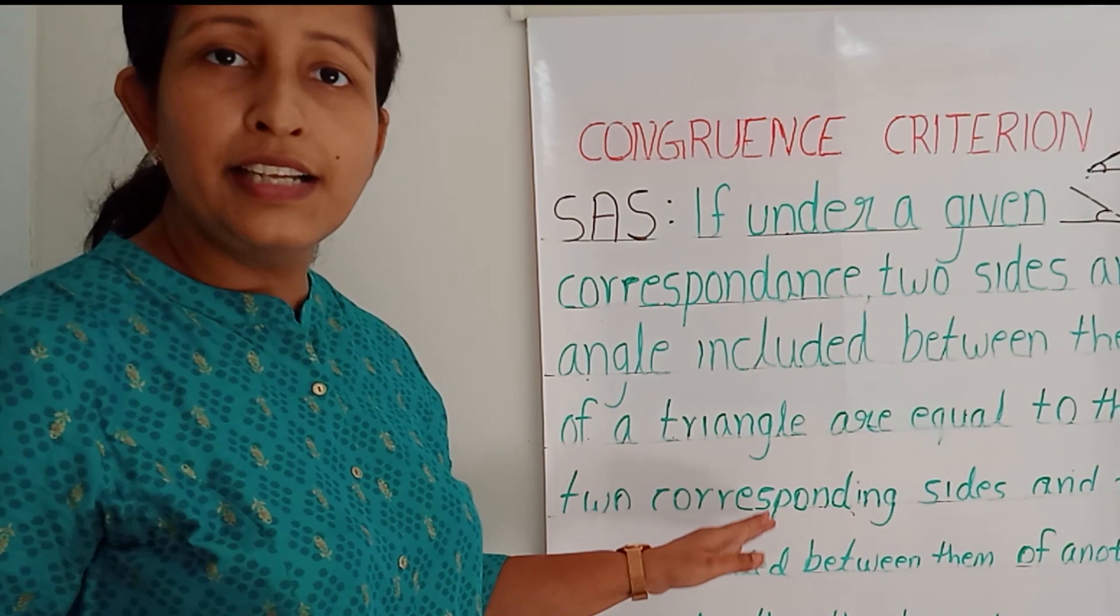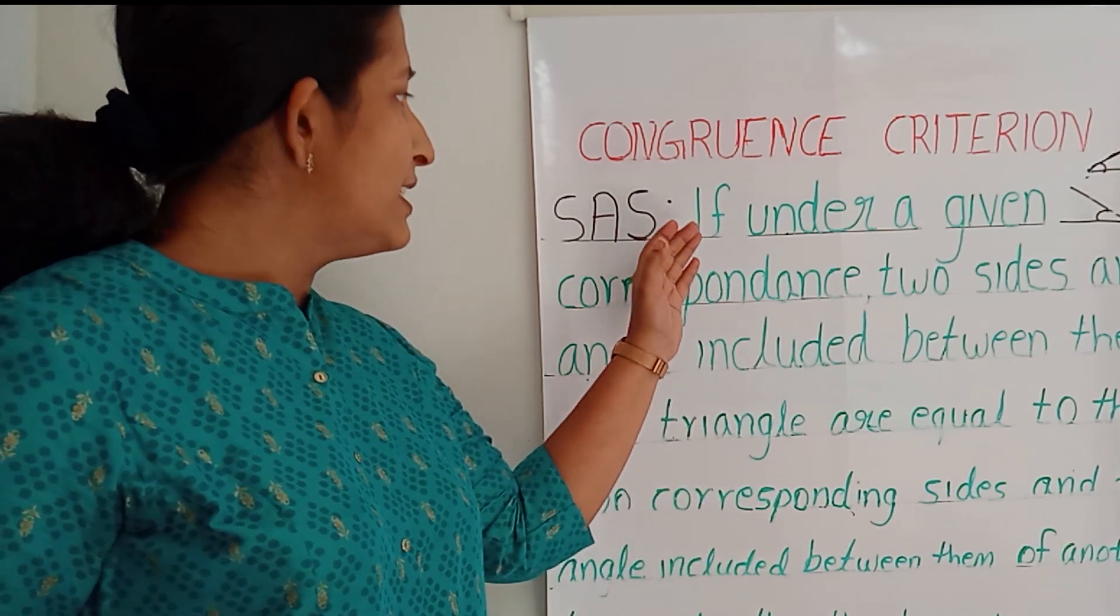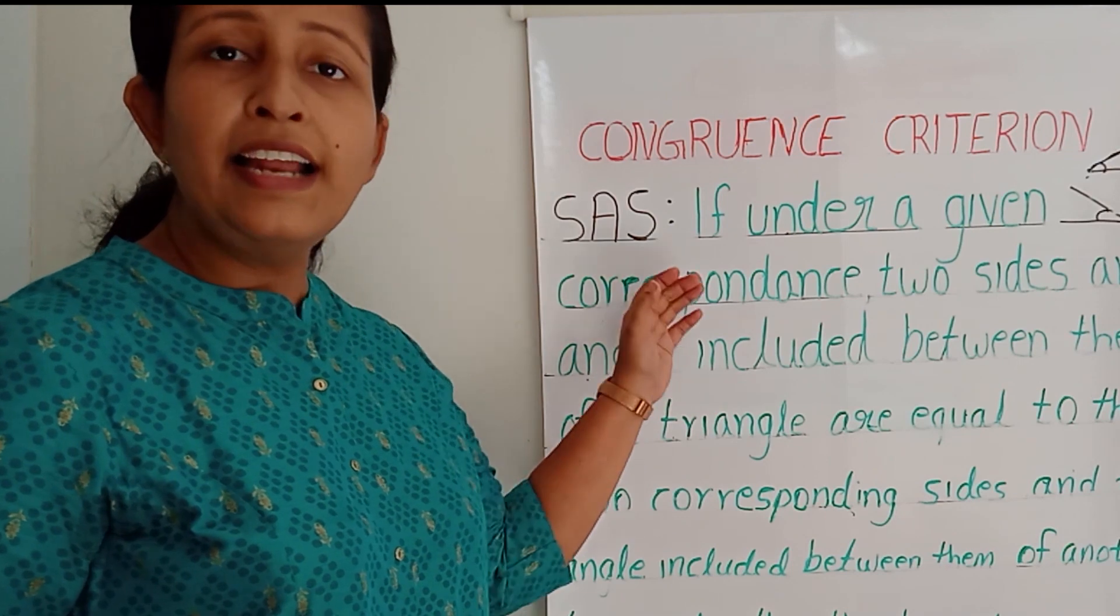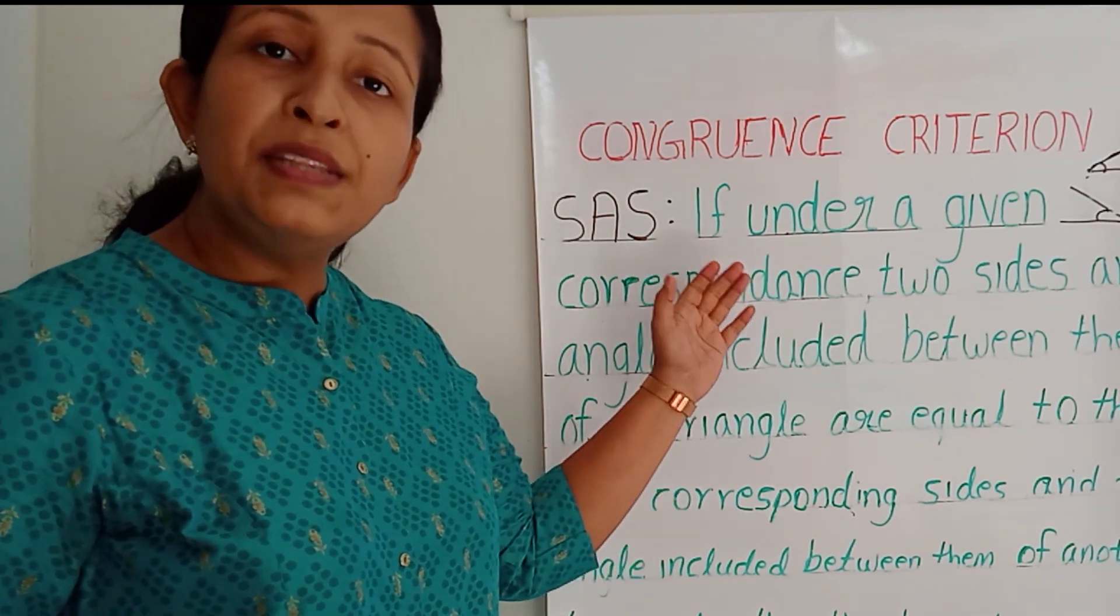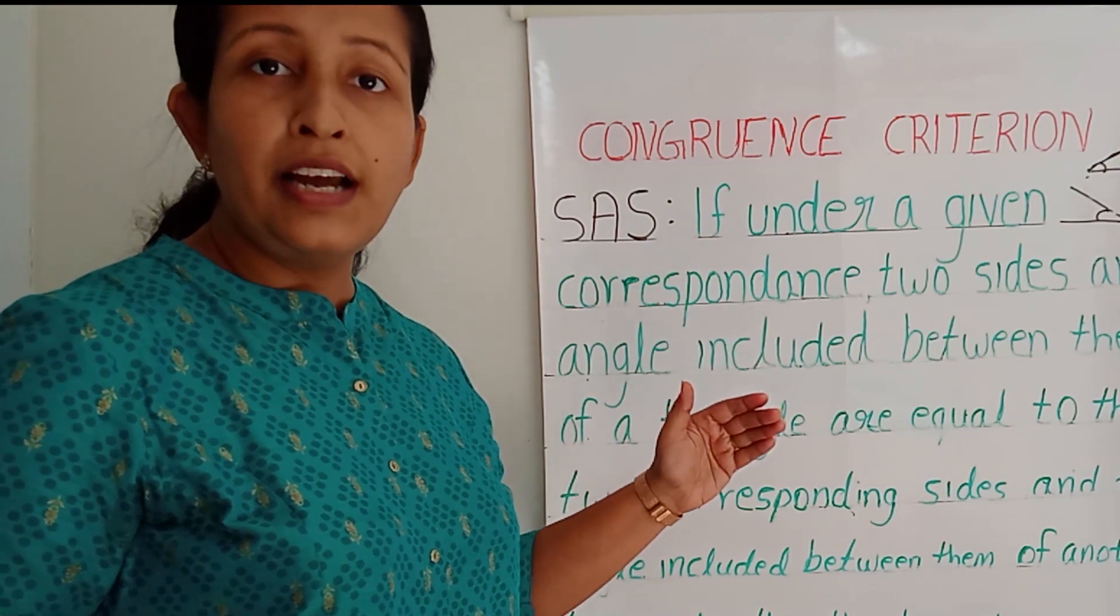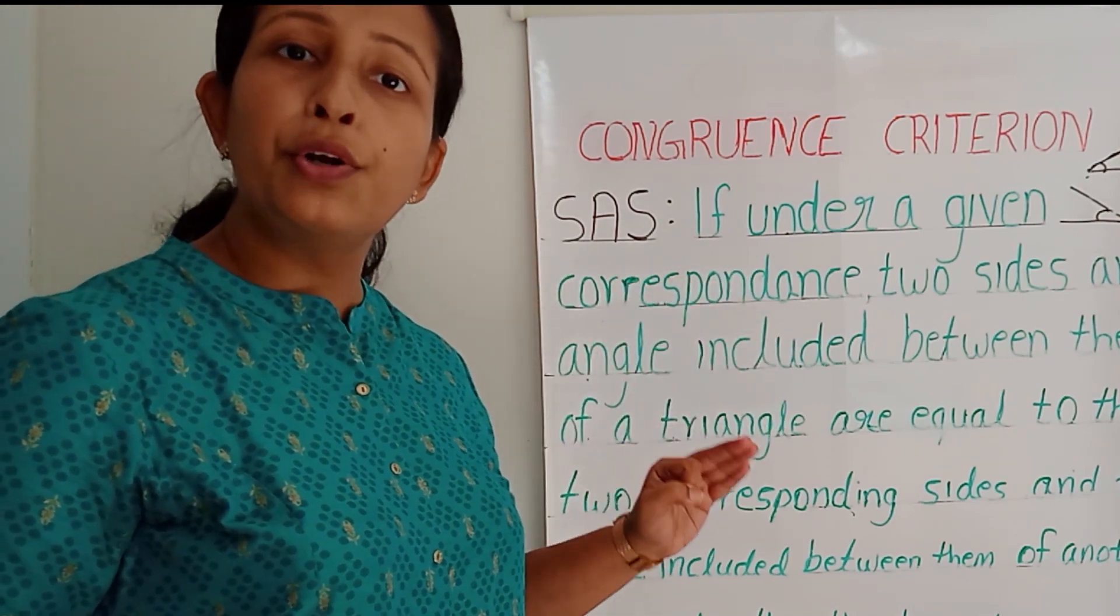So you should by heart this SAS congruence criteria. So we covered SSS congruence criteria and SAS congruence criteria. From these two, we understood that by getting three data, we can draw a congruent triangle.